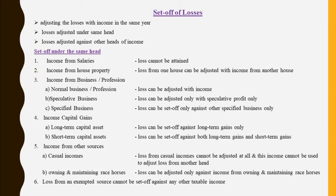Income from salaries: a salaried person earns income if he is going for a job. If he is not going for a job, then he will not earn any income. Under the head salaries, there is no question of loss — we will never incur a loss under the head salaries. When there is no loss, there is no need to adjust it at all. Loss cannot be attained under the head salary, so there is no question of adjustment of losses under the head salaries.